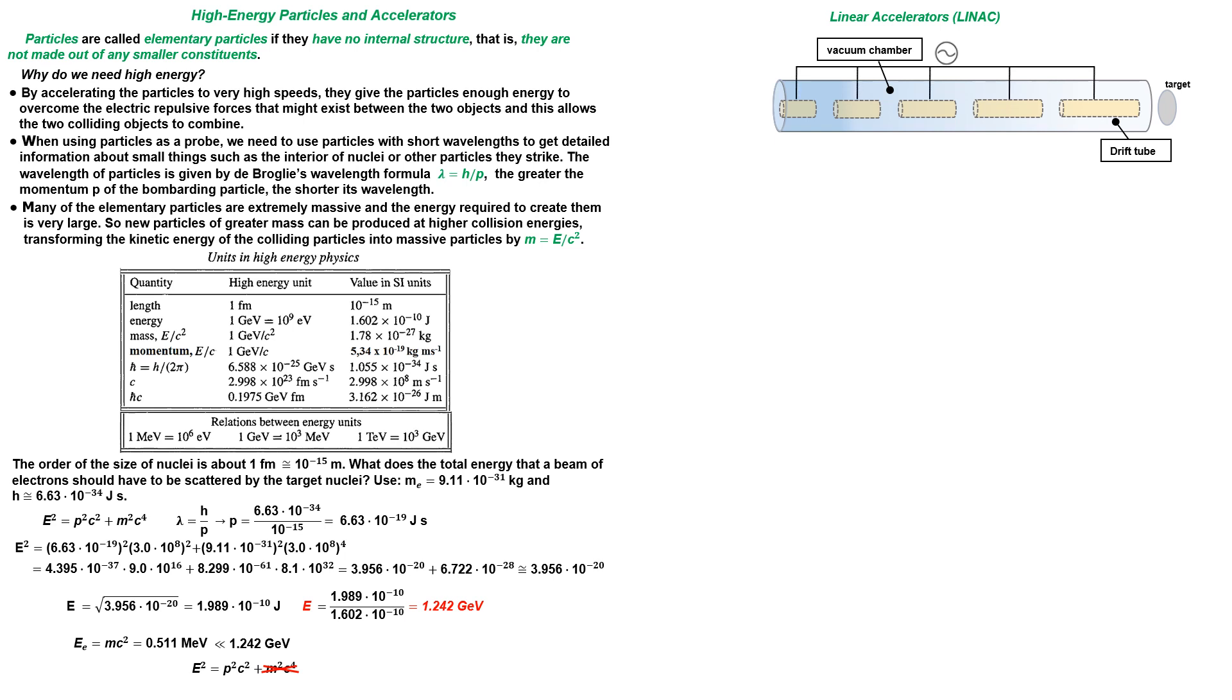The hollow tubes are called drift tubes and they are connected to a source of high frequency alternating voltage. When the first tube has a positive potential, the electron is accelerated into it. There is no electric field within the tube, so the electron moves at a constant velocity.